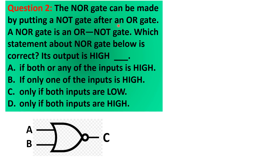Question number 2: The NOR gate, whose diagram is shown below, can be made by putting a NOT gate after an OR gate. An ordinary OR gate has that fish-head symbol, but a NOR gate has a circle at the right-hand side of the OR gate symbol attached to it, which connects the output terminal C. So this is the symbol for a NOR gate.